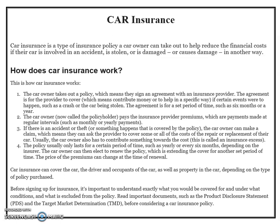How does car insurance work? The car owner takes out a policy, which means they sign an agreement with the insurance provider. The agreement is for the provider to cover — which means contribute money or to help in a specific way — if certain events were to happen, such as a crash or the car being stolen. The agreement is for a set period of time, such as six months or a year.